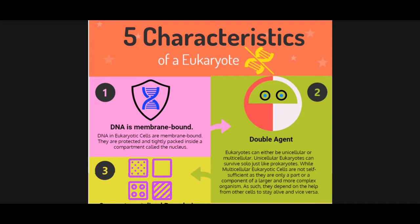Number two: double agent. Eukaryotes can either be unicellular or multicellular. Unicellular eukaryotes can survive solo just like prokaryotes — they don't need help from other types of cells. While multicellular eukaryotic cells are not self-sufficient; they need to depend on other cells to survive because they are usually part of a much larger organism. Just like the cells in our body — one blood cell or one skin cell will not survive without help from brain cells, heart cells, and other types of cells.